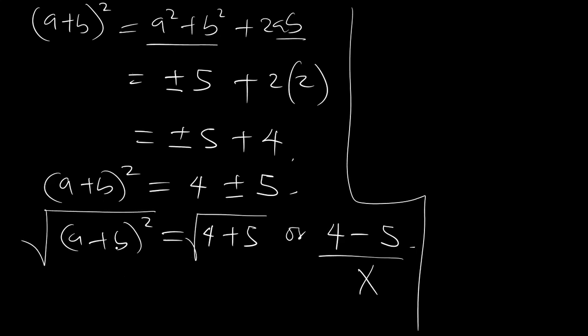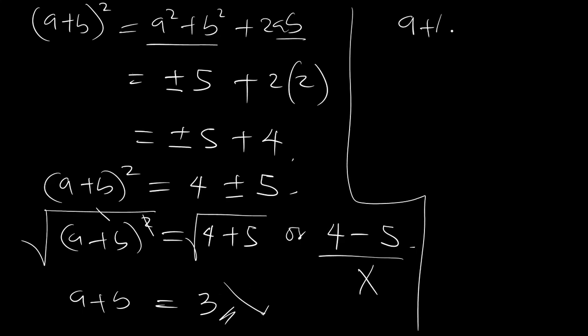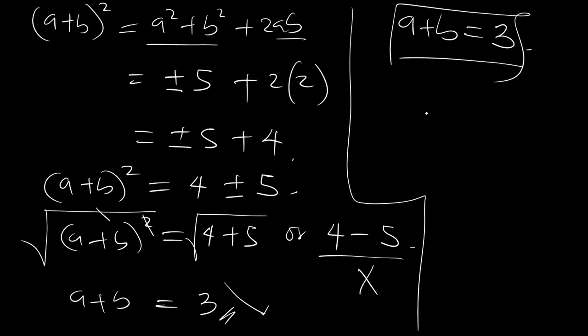Taking the square root of 9, the square root and the square cancel out, leaving a plus b equal to 3. So the final answer is a plus b equals 3. Thank you for watching till the end — please subscribe.